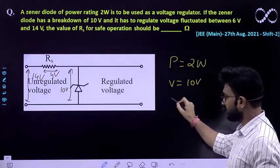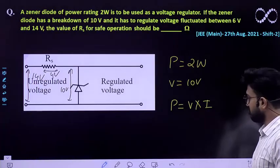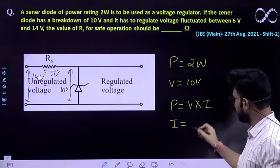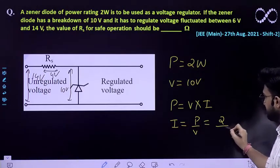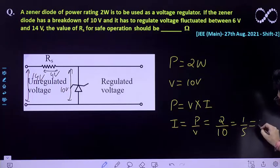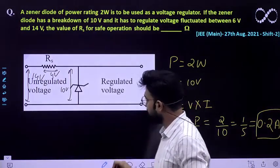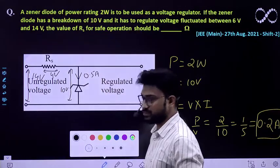So we already know the equation that power is V times I. So I can easily be calculated as the current across this diode is I equal to P by V. So it would be 2 divided by 10 which is 1 by 5 which is 0.2 ampere. So this is the current which is flowing through diode.